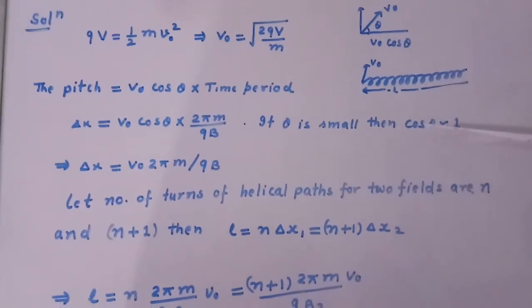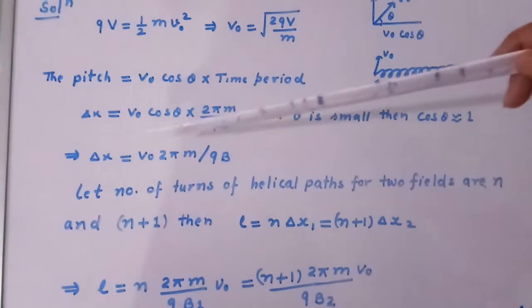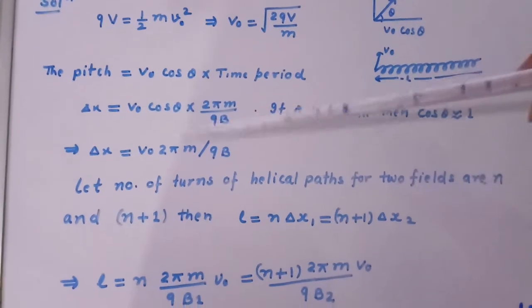If theta is small then cos theta will be taken as 1. So this value will be delta X equal to V0 times 2 pi M divided by QB.